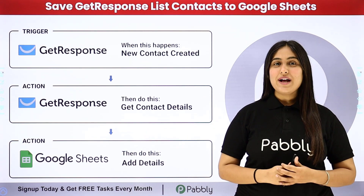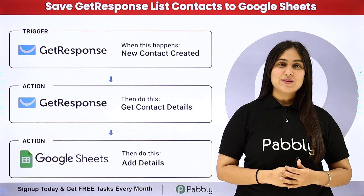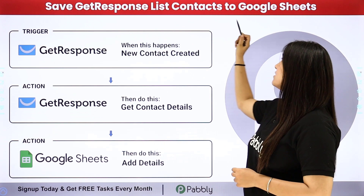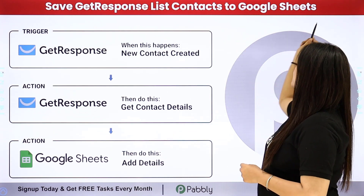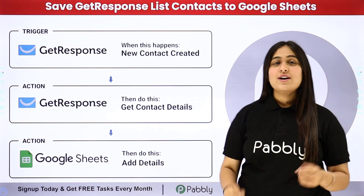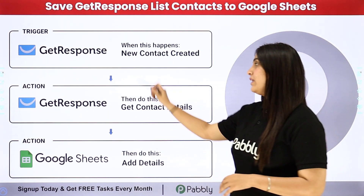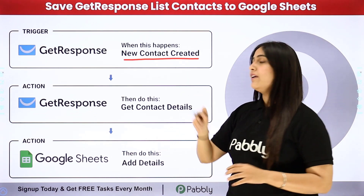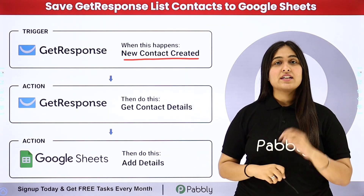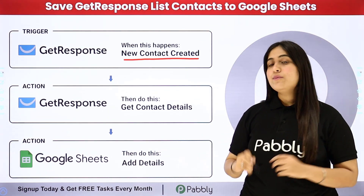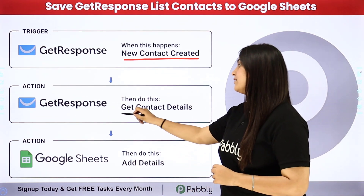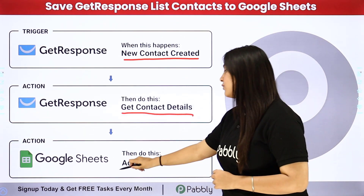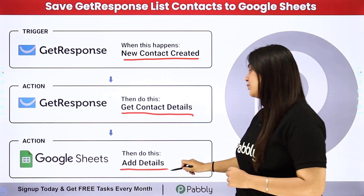Hello everyone, welcome back to Pabbly. In this video we are going to learn how to save GetResponse list contacts to Google Sheets. Whenever a new contact is created in my GetResponse account under a specific list, automatically we should get the contact details and these details should be added in our Google Sheets as a new row.